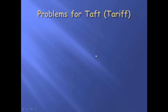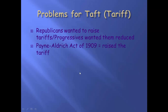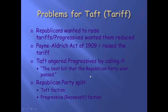A couple of issues for Taft, though — he wasn't as strong a progressive as Teddy would have wanted. Republicans wanted to raise tariffs; progressives wanted them to go down. What does Taft do? He signs the Payne-Aldrich Act of 1909, which actually raises the tariff a little bit — not a lot, but a little bit. Taft angered progressives and said it was the best thing we ever did. Progressives want the tariff to go down, and what does Taft do? He raises it. The Republican Party is split.